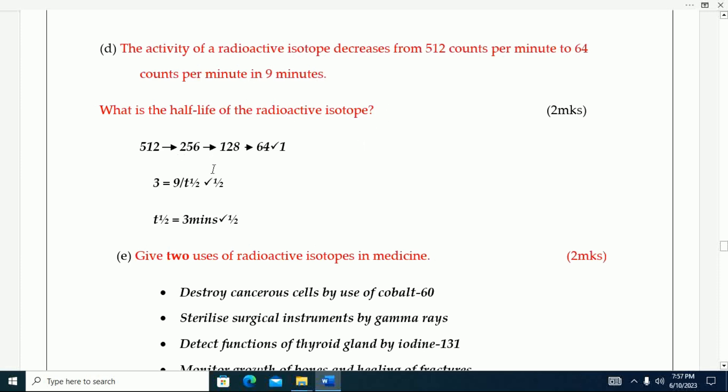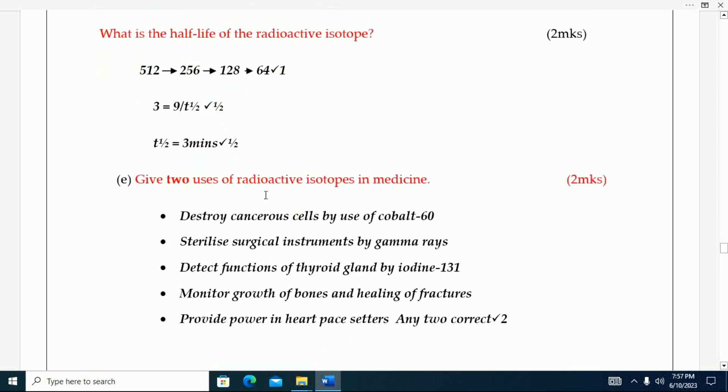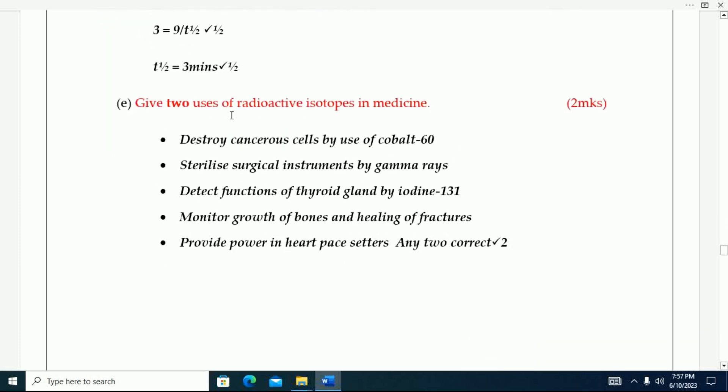Give two uses of radioactive isotopes in medicine. Destroys cancerous cells by use of cobalt. Sterilize surgical instruments by gamma rays. Detect functions of thyroid gland by iodine. Monitor growth of bones and healing of fractures. Provide the power in heart pacesetters.